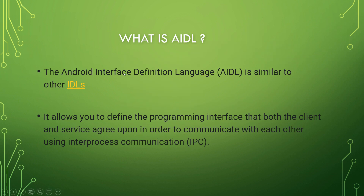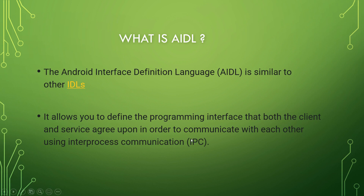To begin with, AIDL is Android Interface Definition Language. It is similar to other interface definition languages. For one process to communicate with another process, this interface definition language is very important. It allows you to define the programming interface that both the client and the service agree upon in order to communicate with each other using inter-process communication.